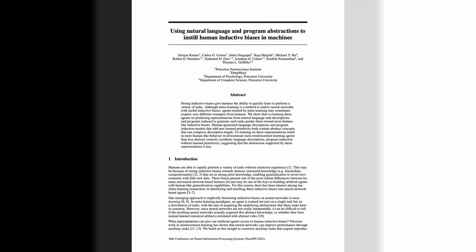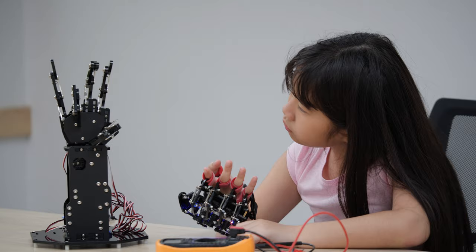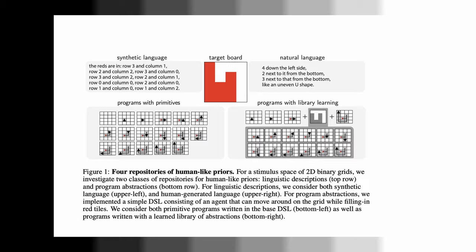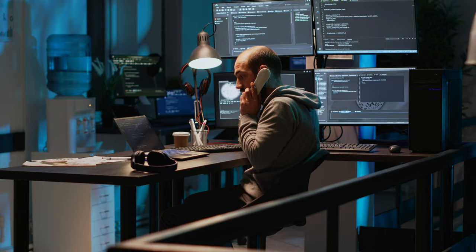Research has shown that humans possess strong inductive biases which enable them to quickly learn and generalize. In order to instill the same useful inductive biases into machines, a paper was presented by Srijan Kumar at the NeurIPS conference, where it won the Outstanding Paper of the Year award. The paper is called 'Using Natural Language and Programme Abstractions to Instill Human Inductive Biases in Machines.' It focuses on a controlled stimulus space of two-dimensional binary grids and a feedback loop of collaboration between humans and machines to understand the differences in their inductive biases.